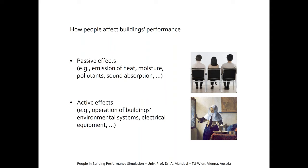Whereas we have a fairly good idea of how to represent the building fabric, building construction, building systems, and the conventions for representing external boundary conditions — as time series of temperature, solar radiation, and wind speed in weather files regularly used in building performance simulation — those input variables are fairly well understood. We always find better, more advanced ways to represent them, but in principle we have a good understanding.